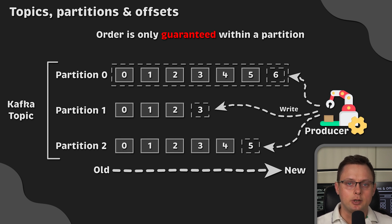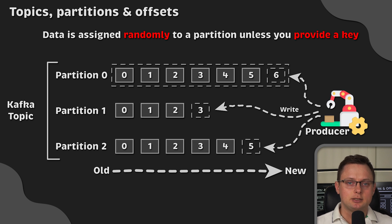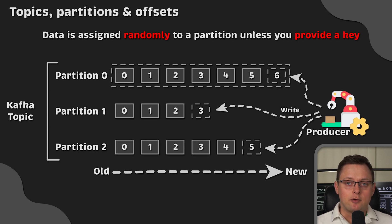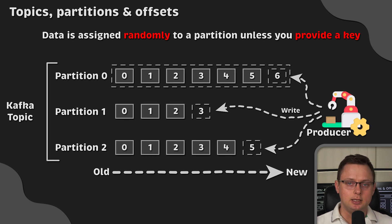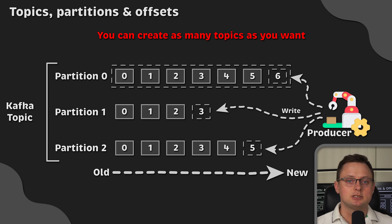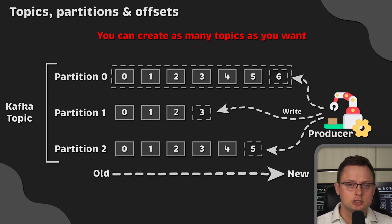We'll see later how we can achieve cross-partition ordering if we need it. Data sent to a Kafka topic is assigned to a random partition — for example, 0, 1, or 2 in this example — unless you provide a key. Later I'll show you what happens when we use a key. In a Kafka topic you can have as many partitions as you want — sometimes 3, sometimes 10, or maybe 100. We'll discuss how to determine the right number of partitions for your topic later as well.